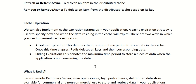Cache expiration is an important concept applicable to both in-memory and distributed caches. A cache expiration strategy specifies how and when data residing in the cache will expire. There are two ways to implement cache expiration. Absolute expiration denotes the maximum time period to store data in the cache — once this time elapses, Redis or any distributed cache automatically deletes the keys and corresponding data.